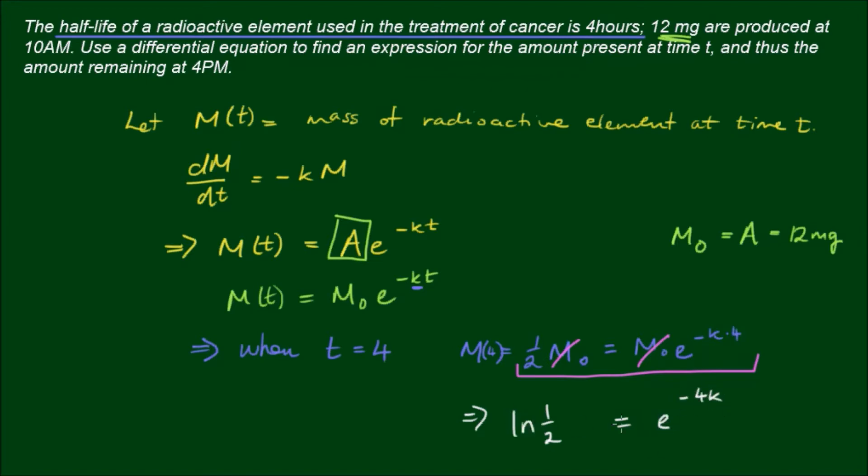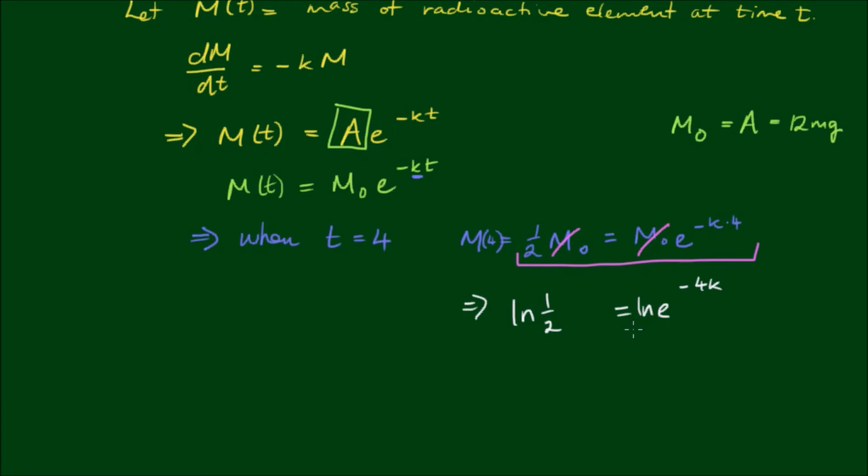Take the log of both sides. Natural log and the e cancel out. So we have -4k equals log of 1/2. Now the natural log of 1/2, if we simply follow our logarithmic laws, is negative the natural log of 2. So we have a negative on the left and a negative on the right. And these cancel.